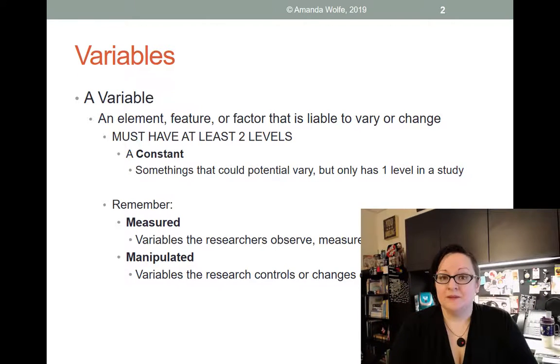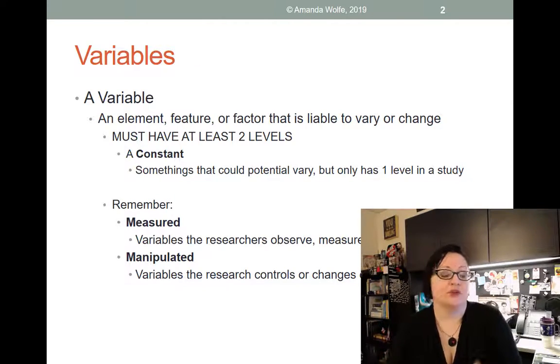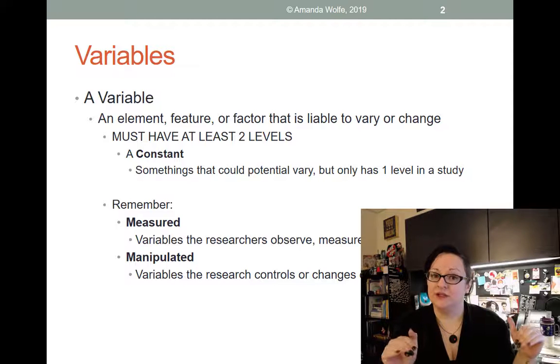There are ones that we only measure and ones that we manipulate. The ones that we manipulate are the ones that as a researcher, we actually do something to directly. Sometimes I hear the phrase, well, I picked which ones I wanted to examine. So that's manipulation, right? No. Manipulation means that you, the researcher, are actually changing something. Whereas measured variables are just things that we measure. We don't actually try to influence them or change them or give one group one version and one group another. We're literally just measuring.